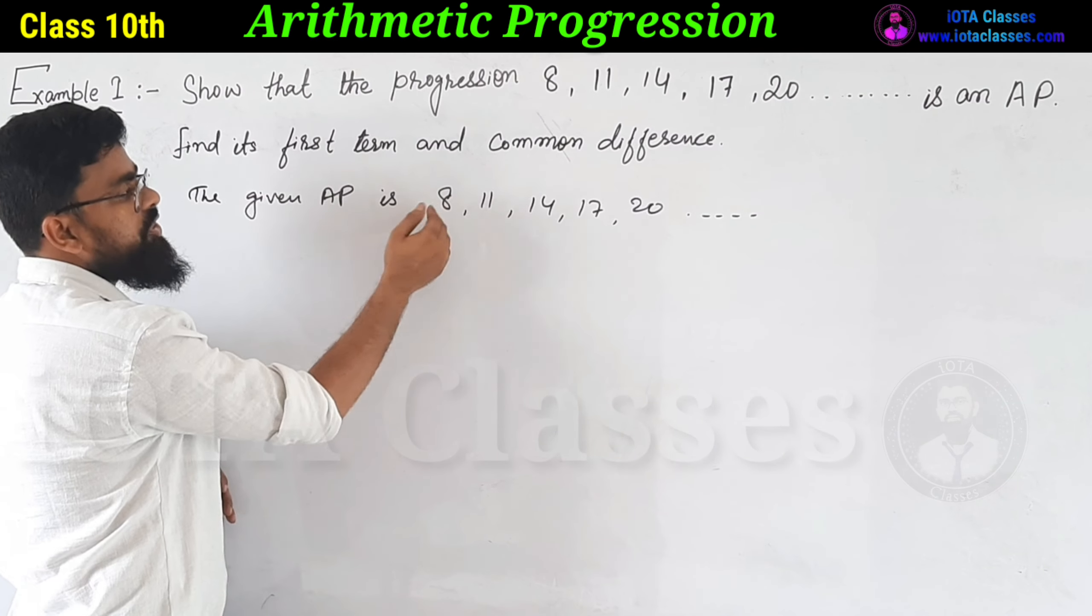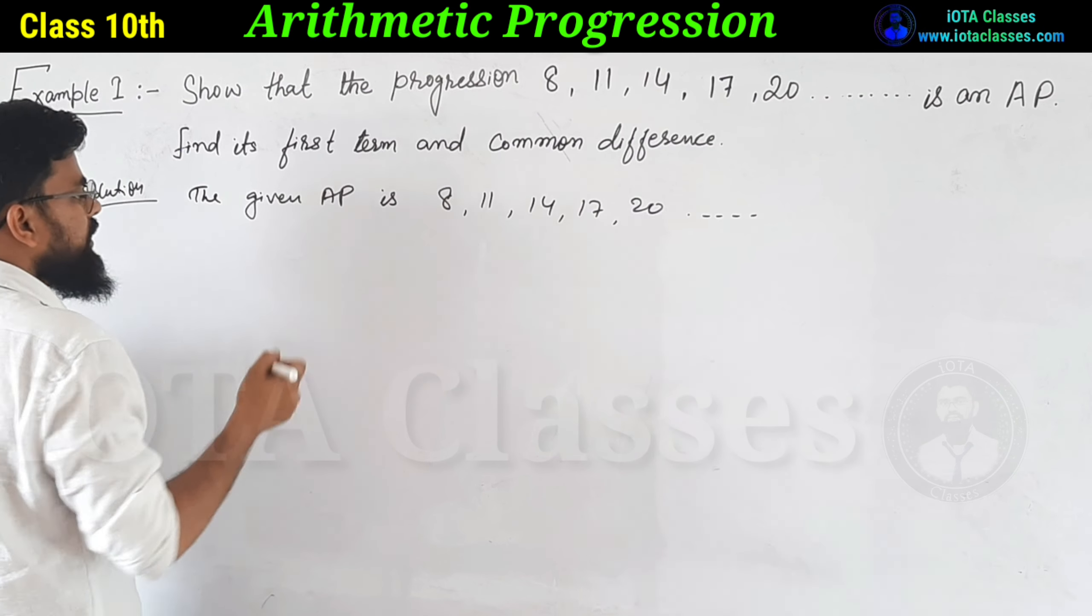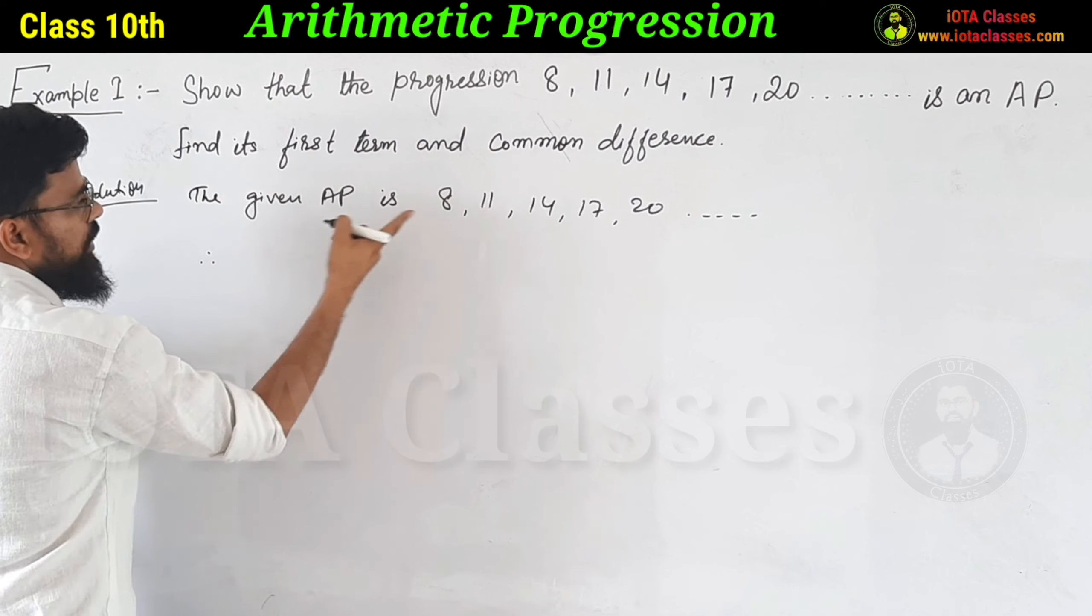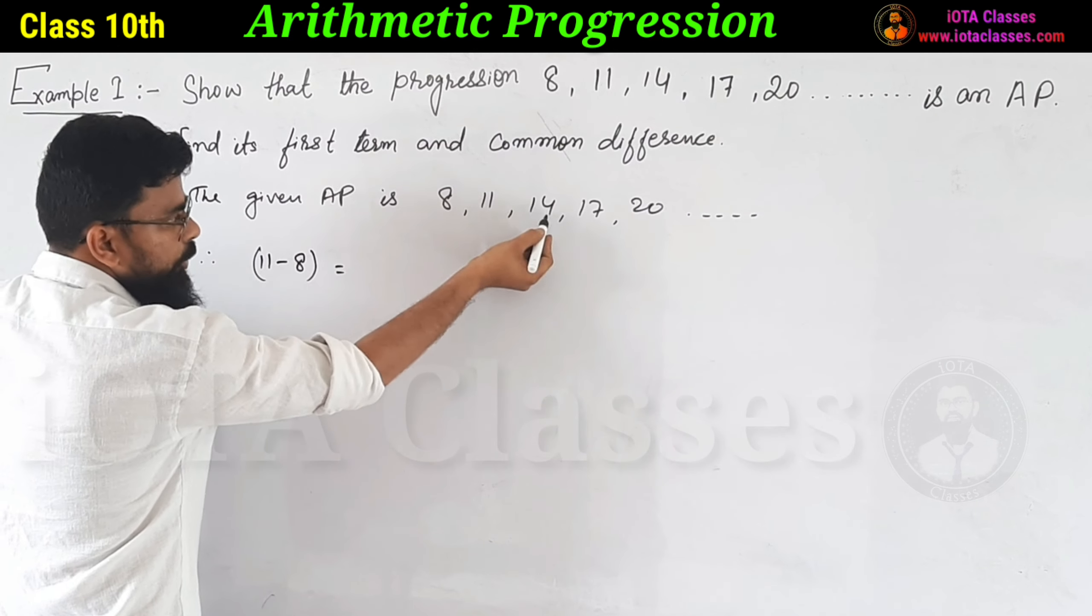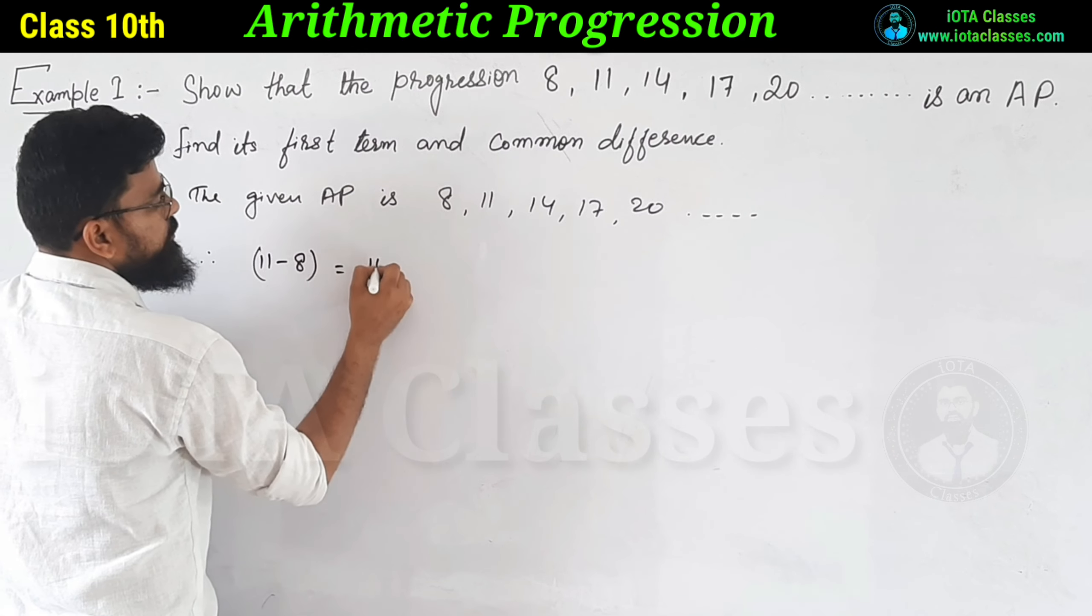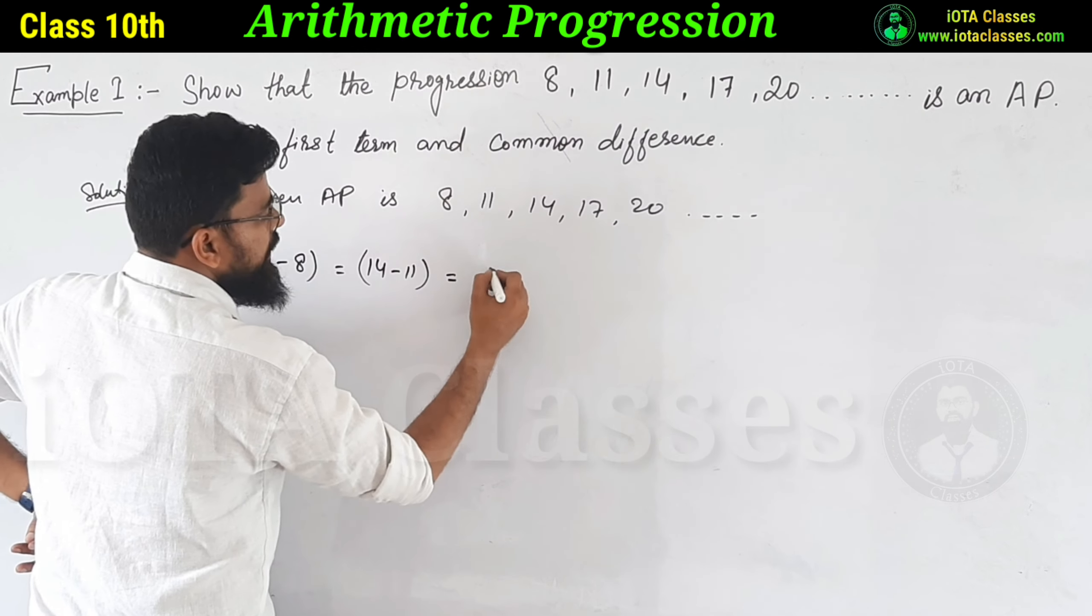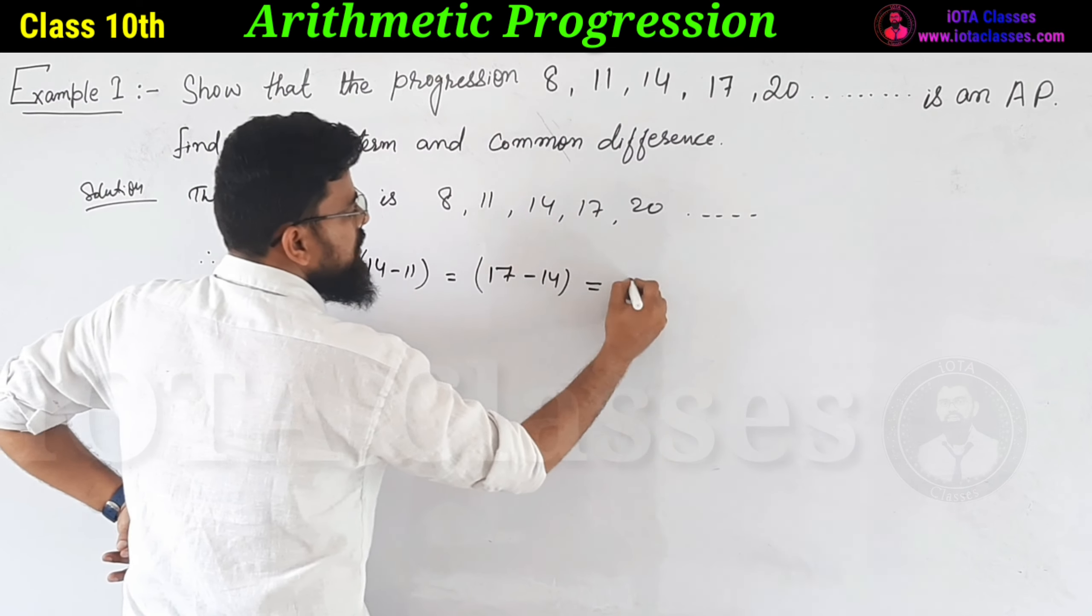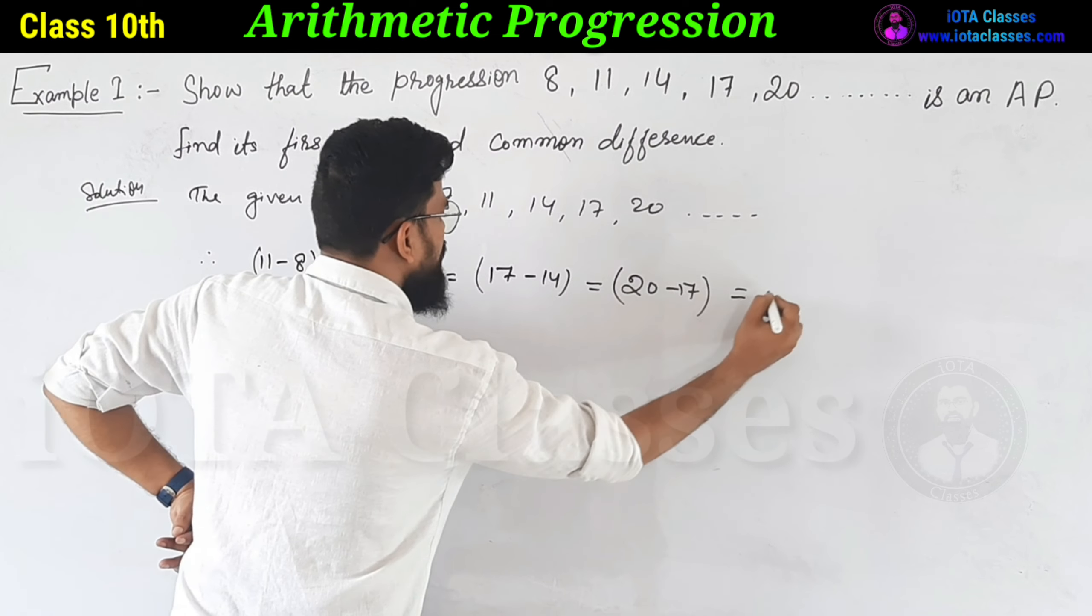How do we do that? The answer is: 11-8 = 14-11 = 17-14 = 20-17 = 3